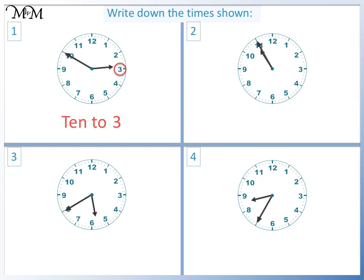Question 2: The minute hand is pointing to 11, so this is 5 to. The hour hand is moving towards 11, so the time is 5 to 11. Question 3: The minute hand is pointing to 8. If we count in fives anti-clockwise, we find that this is 20 minutes to. The hour hand is moving towards 6, so the time is 20 to 6.